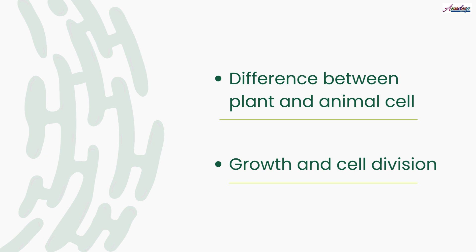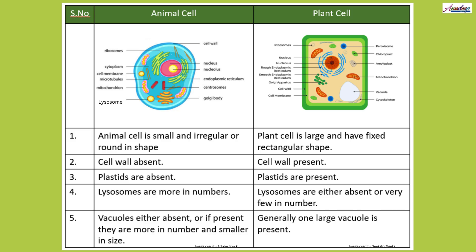Let's start with the differences between animal cell and plant cell. First, animal cell is small and irregular or round in shape, while plant cell is comparatively large and has a fixed rectangular shape. Second, cell wall is absent in animal cell while cell wall is present in plant cell. Third, plastids are absent in animal cell while these are present in plant cell.